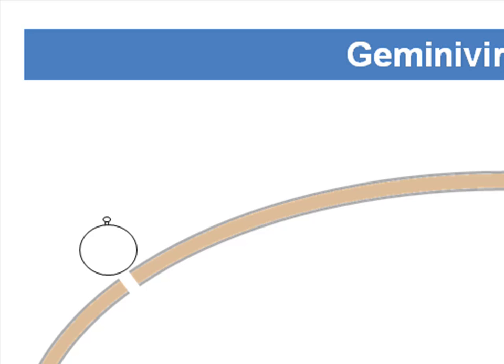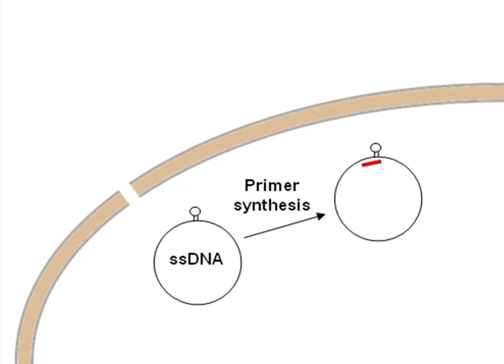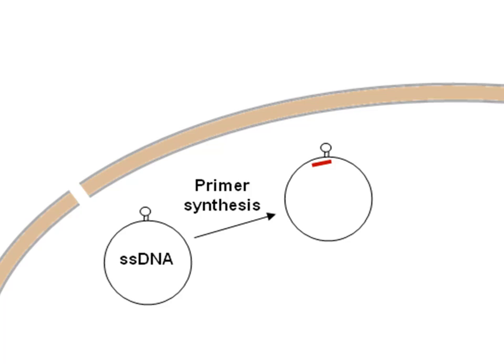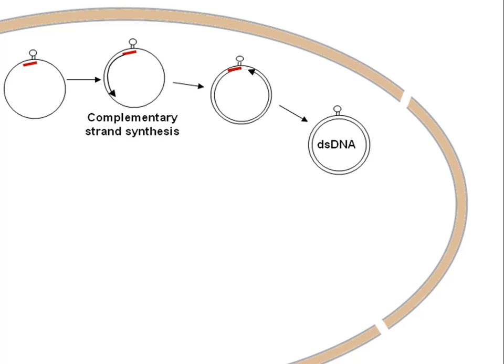This genome then enters the nucleus of the cell, where the oligo for the complementary strand is synthesized by the host cellular enzymes. Once the complementary oligo is synthesized, it is followed by complete complementary strand synthesis, also carried out by the host cellular enzymes.